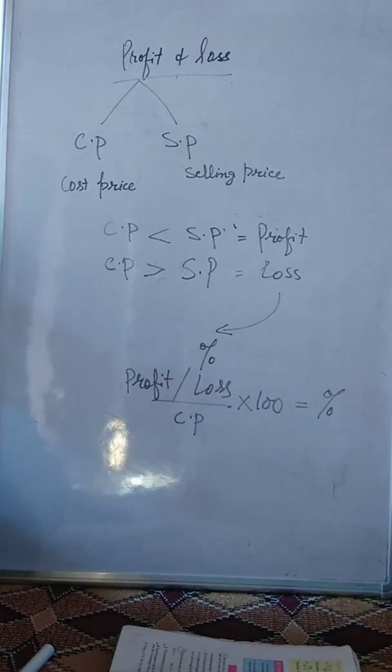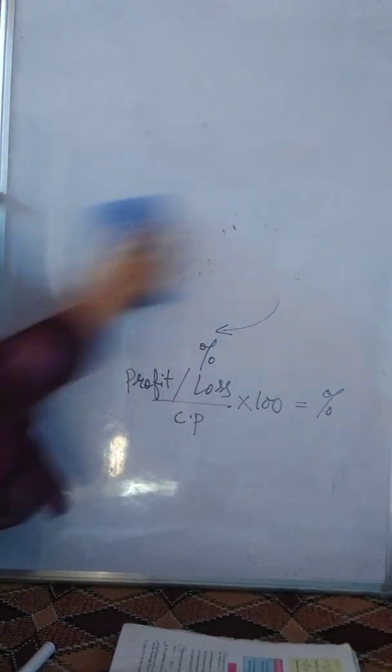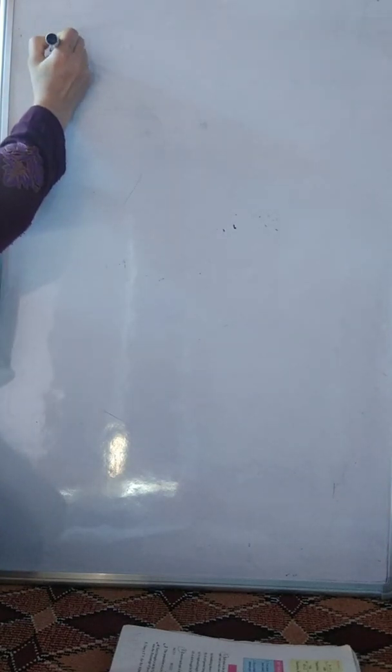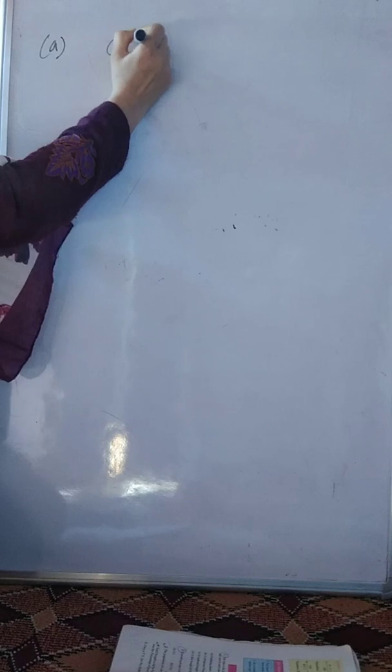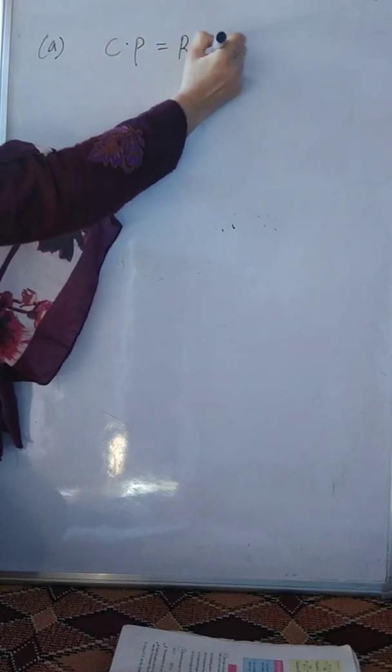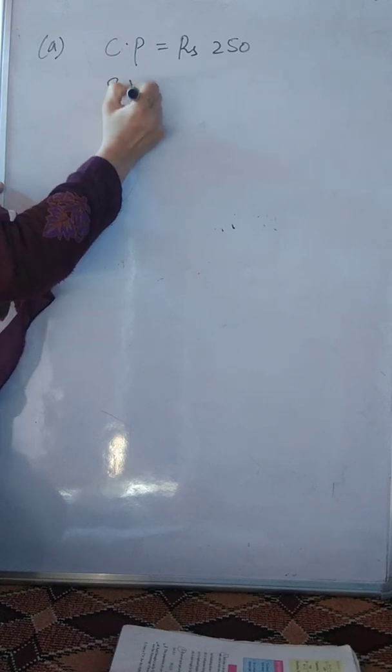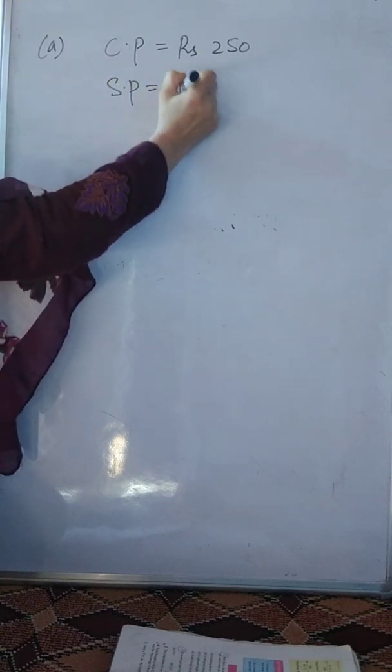Yahase nikalata hai hamein profit ki percentage ya loss ki percentage. Ab hame karenge question number one ka pahla part. Gardening shares bought for rupees 250 and sold for rupees 325. This means hame nai gardening shares hame nai kharii dei. Gardening shares kharii dei gayi 250 mein aur 325 mein beechi diyei. CP is equal to rupees 250, SP is equal to rupees 325.